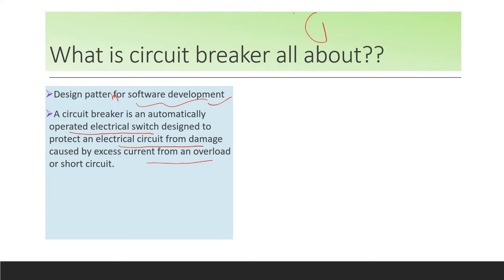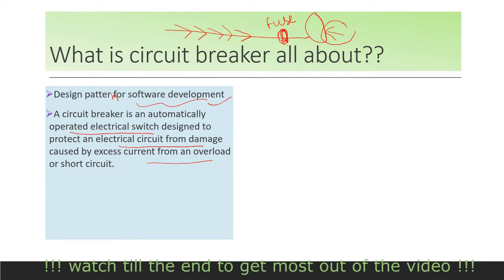In an electrical circuit, there is a bulb and a wire providing electricity. Electricity is flowing through and at some point there is a fuse. If there is an overflow of electric current, to prevent the failure of equipment — whether it's a bulb, washing machine, or any other expensive equipment — this excess electricity causes the fuse to blow. The circuit is broken and electricity is no longer passing through, safeguarding your expensive equipment by cutting the circuit.